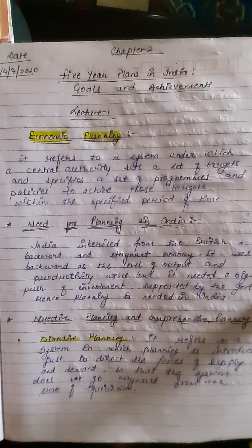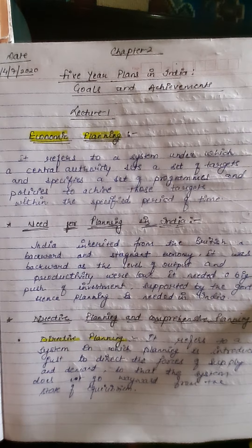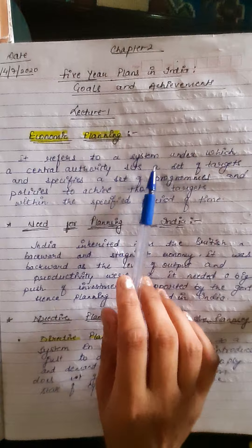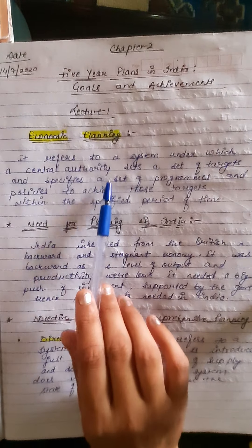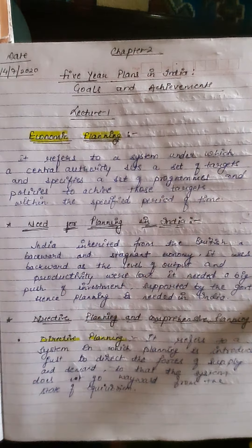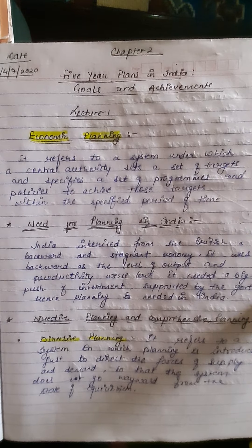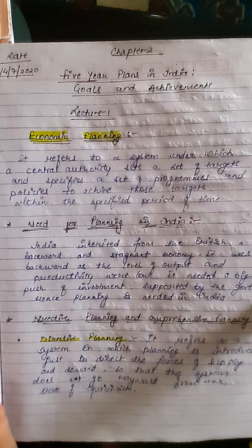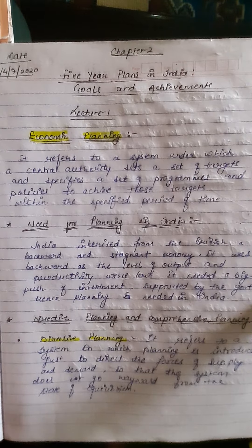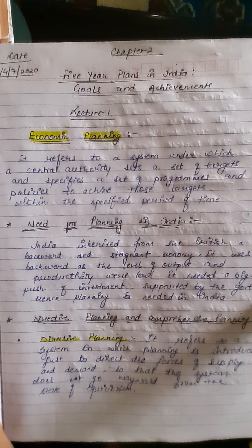This is lecture one on this chapter. First, what is an economic problem? Economic planning refers to a system under which a central authority sets a set of targets and specifies a set of programs and policies to achieve those targets within a specified period of time. In India, this central authority is called the Planning Commission.